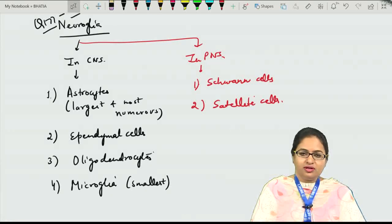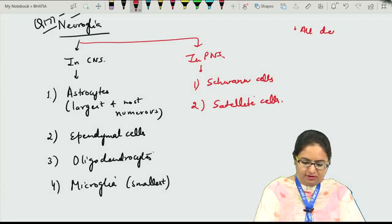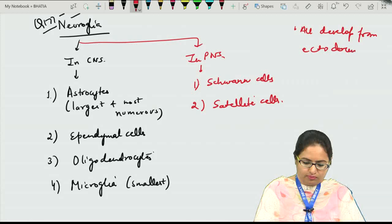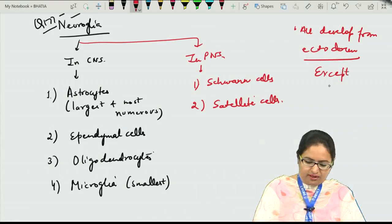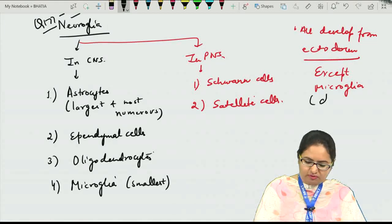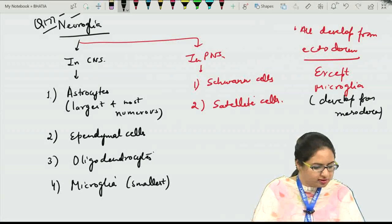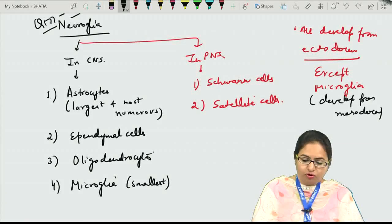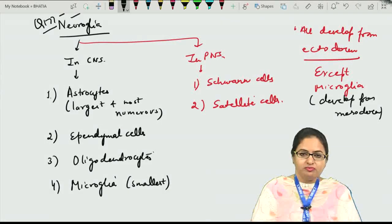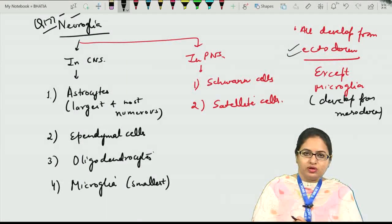All the neuroglia develop from the ectoderm, except the microglia, which actually develop from the mesoderm. Only the microglia develop from the mesoderm; all the rest of the cells develop from the ectoderm.